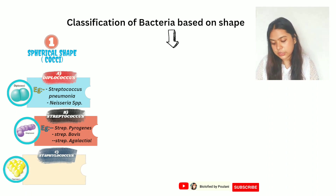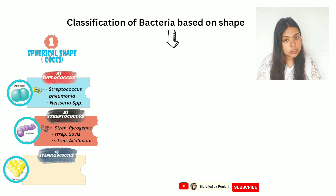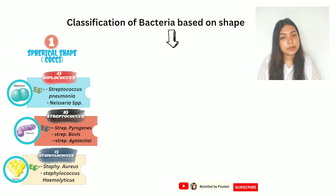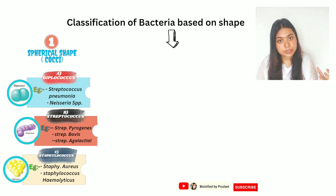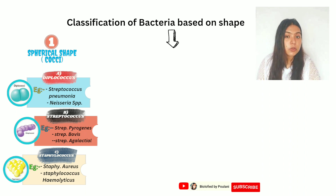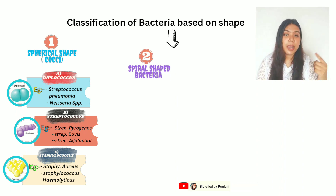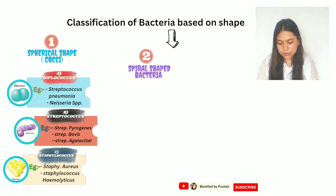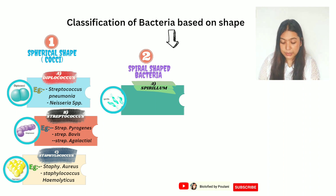Staphylococcus shape means they form branch-like or cluster arrangements. Staphylococcus aureus causes boils, abscesses, and cellulitis. Staphylococcus haemolyticus is known to cause meningitis. Next, spiral-shaped bacteria — they are in a spiral form, like a spiral strand. Examples include Spirillum-shaped and Spirochete-shaped bacteria.